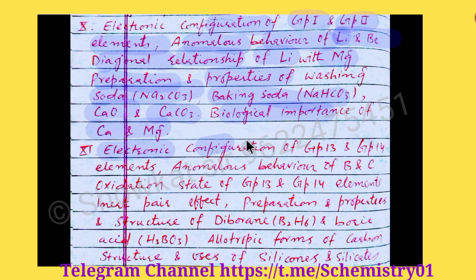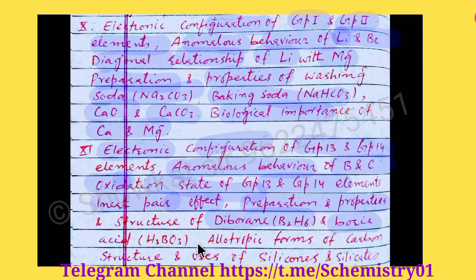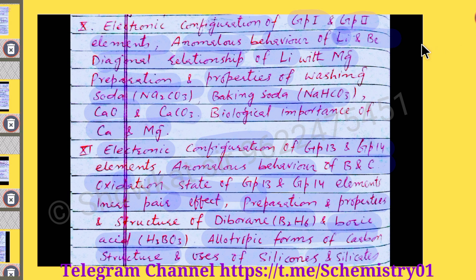The next chapter is P-Block Elements. The most important topics here: you will study the electronic configuration of Groups 13 and 14 — the boron family and carbon family. The anomalous behavior of boron and carbon, the reason why they show anomalous behavior, the oxidation states of Group 13 and 14 elements, and the inert pair effect — that's very important. You will also study the structure, preparation, and properties of diborane and boric acid. Then allotropic forms of carbon — graphite, diamond, and buckminsterfullerene — and the structure and uses of silicones and silicates, from which one question is asked.